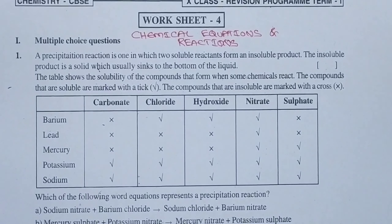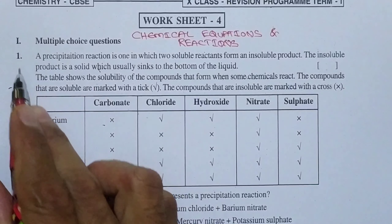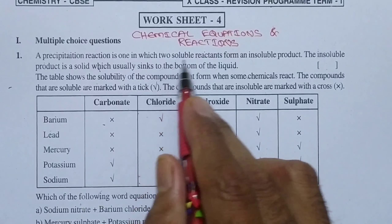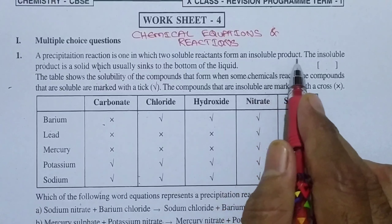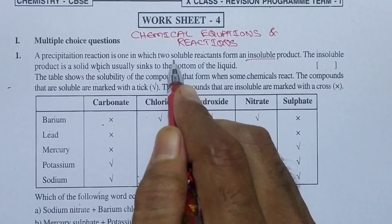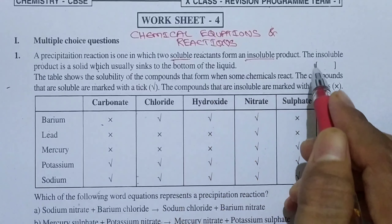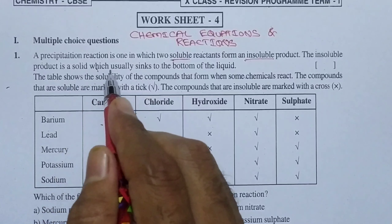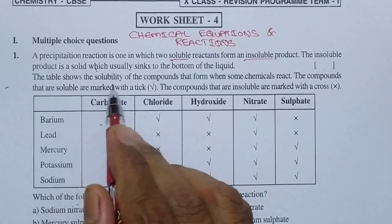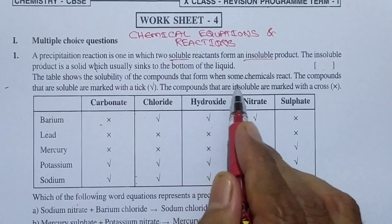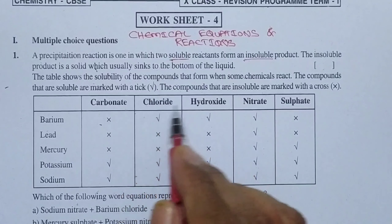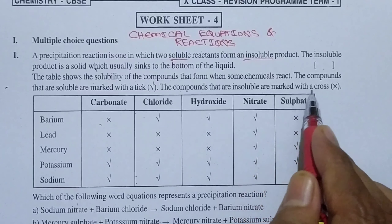Now let us see Roman number 1, that is Multiple Choice Questions. Question number 1: a precipitation reaction is one in which two soluble reactants form an insoluble product. The product should be insoluble and the reactants should be soluble. The insoluble product is a solid which usually sinks to the bottom of the liquid. The table shows the solubility of compounds that form when some chemicals react. Compounds that are soluble are marked with a tick; compounds that are insoluble are marked with a cross.